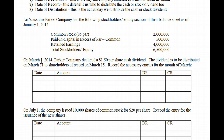On March 1, 2014, Parker declared a $1.50 per share cash dividend, to be distributed on March 31 to shareholders of record March 15. March 1 is the date of declaration, so we record the dividend. Depending on your situation, some companies will record this as a cash dividend account, while others will hit it directly against retained earnings — either account is fine.